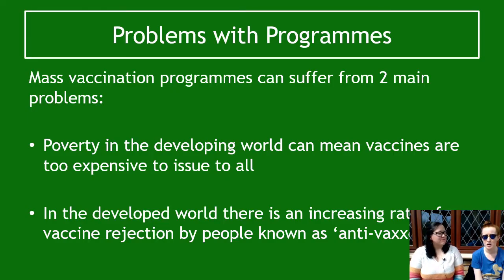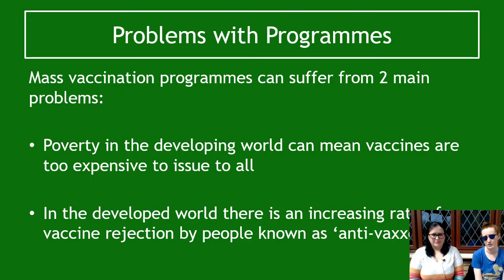Anti-vaxxers are people who are saying no to vaccines for various different reasons. The idea is that they are rejecting the vaccine, so more and more people are saying they're not going to get vaccinated, which really affects herd immunity when a lot of people aren't getting vaccines.